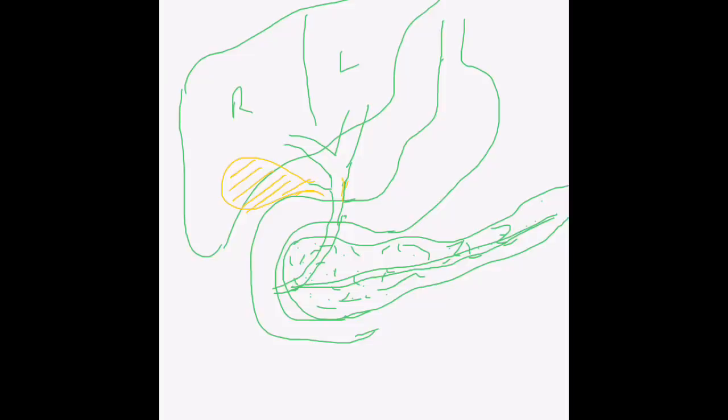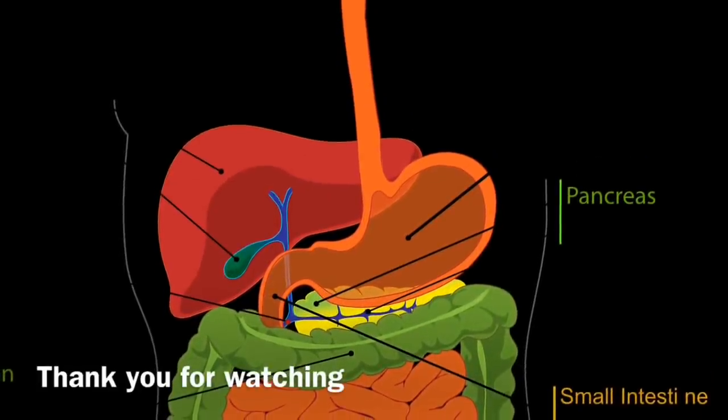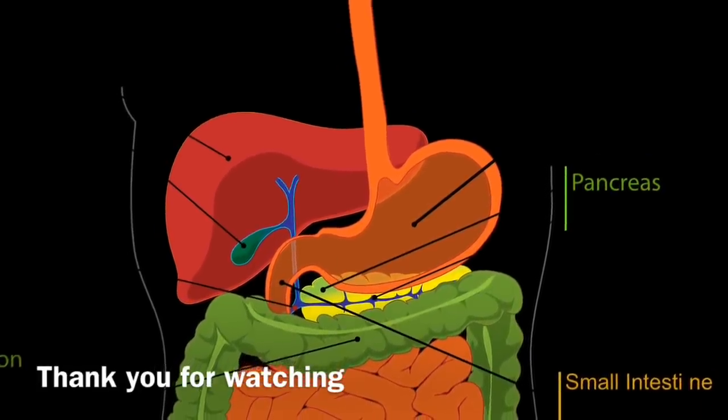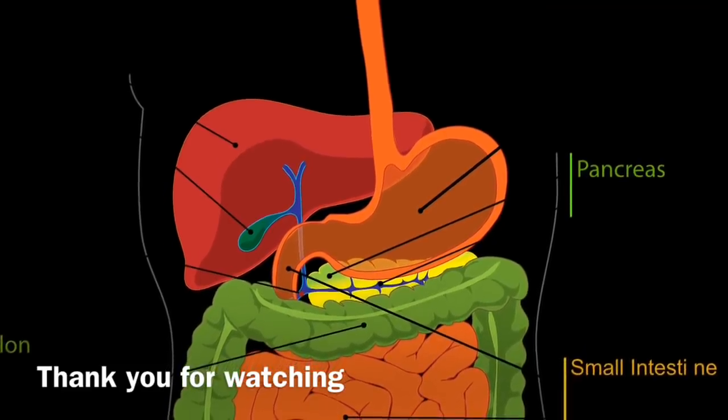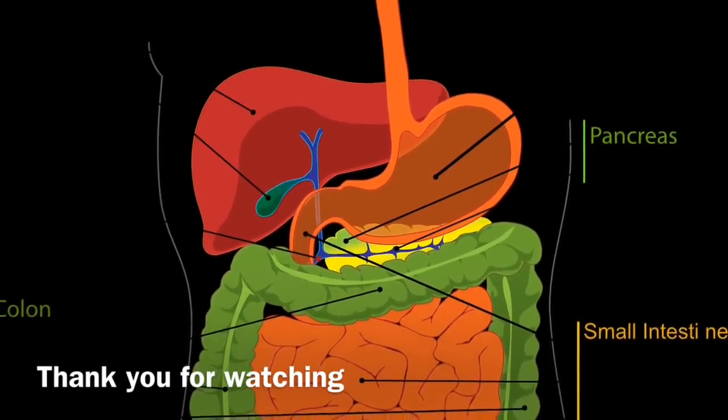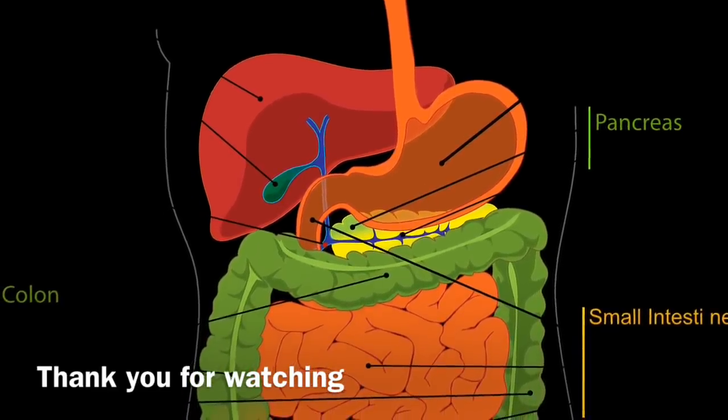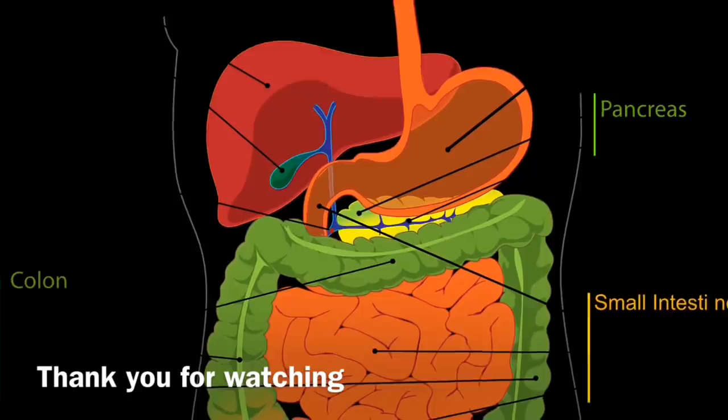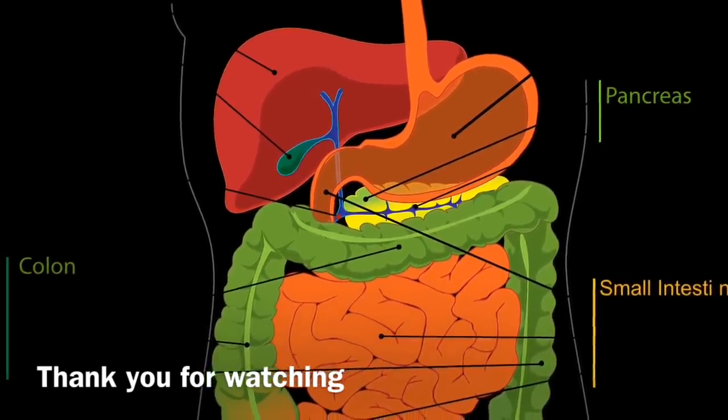It joins in the same spot in the duodenum and both of them open together - that structure is called the common bile duct. So that is how our gut looks like. What it does and how it works is the topic of our second video. Please subscribe and I'll see you in a day or two with the second part of this video on how the gastrointestinal tract works. Thanks for watching.